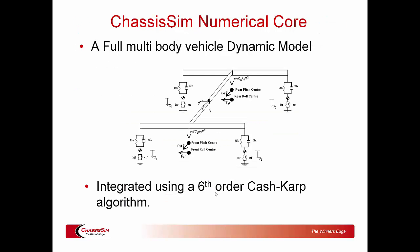At its core, ChassisSim has a full multi-body vehicle dynamic model integrated using a sixth-order Runge-Kutta algorithm. In plain English, the only way you're going to get better than that is to run the car on the circuit — and that is a very, very key point. The full parameterization of what a car looks like is why ChassisSim can do cars as diverse as F1 cars right down to passenger cars. Think of it like the Millennium Falcon from Star Wars — it may not look like much, but it's got it where it counts.